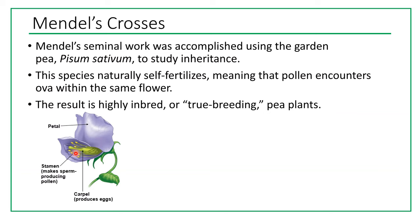The stamen produces pollen, and inside the pollen there is sperm. The carpel is where the egg is located. When Mendel inbred this flower, he would get true-breeding plants, which was important for research on inheritance — you want to know for sure what kind of characteristic can be expressed in a particular plant. Mendel worked with garden peas, but his work can be applied to human genetics as well.